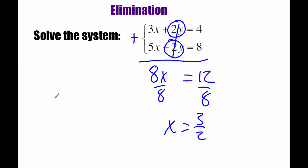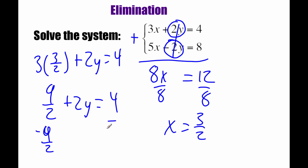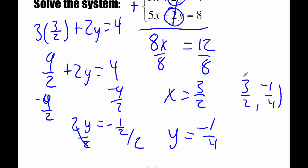Now if we divide both sides by 8, we get an x value of 3/2. We're not quite done because we need to find our y value, so we're going to pick one of those equations — I'm going to work with the top one. So we have 3 times 3/2 plus 2y equals 4. That's 9/2, plus 2y equals 4. Subtracting 9/2 over, 4 minus 4.5 gives us 2y equals negative 1/2. Dividing both sides by 2, we get y equals negative 1/4. So the ordered pair is (3/2, -1/4).